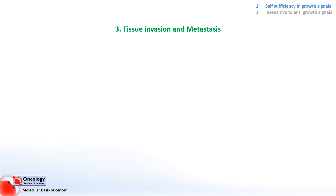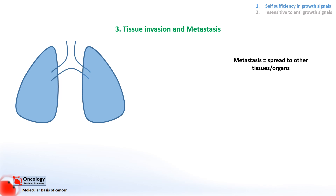The third hallmark is tissue invasion and metastasis, meaning that a growing cancerous tumour needs to be able to invade the tissue around it and spread to other tissues and organs around the body. This process allows the cancer to find other parts of the body where there are more nutrients to sustain its growth.